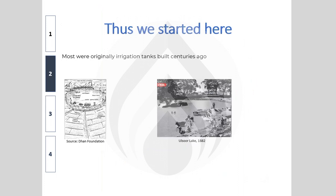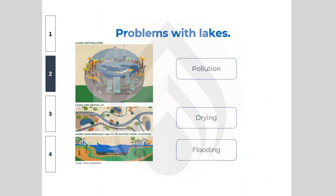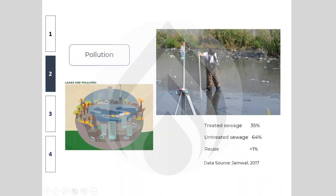Lakes that once were pristine, rain-fed structures meant for cattle, domestic use, and irrigation have evolved into polluted, encroached, or dried-up water bodies. Looking at Bangalore as an example, a large amount of untreated sewage still goes into raw streams despite ongoing construction of new sewage treatment plants. Even where treatment plants exist, high nutrient loads can result in algal blooms and cyanobacterial blooms, which will be addressed in detail in the next class.